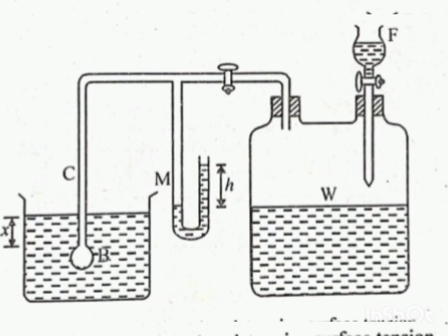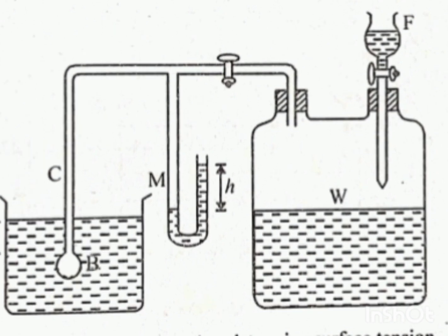This image shows the experimental setup for determining the surface tension using Jagger's method. The principle is the formation of the bubble due to the excess pressure. A capillary tube C is partially dipped in water where the nozzle of the tube is at depth X from the free surface of the liquid, which is water.